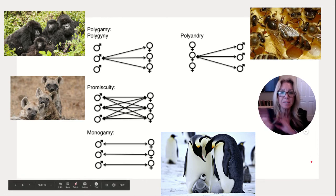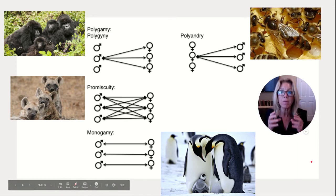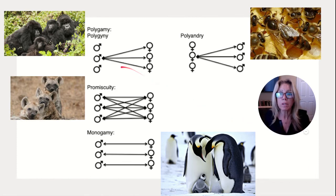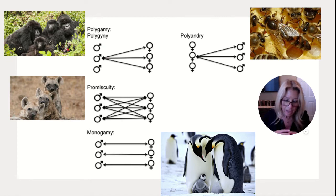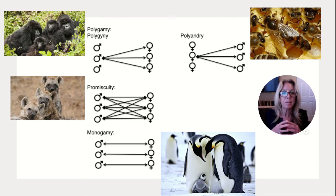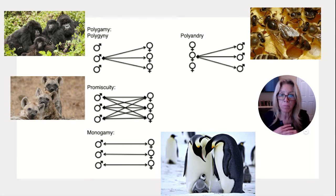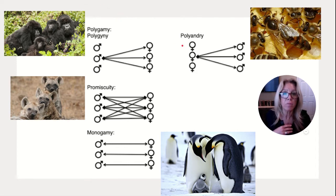Let's look at different types of mating relationships. Polygamy means one male with several females. A single male mates with multiple females — this is valuable when females clump around a food source and a limited number are receptive at any one time.